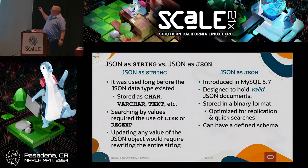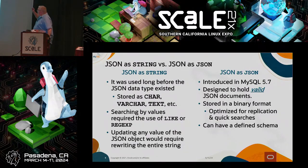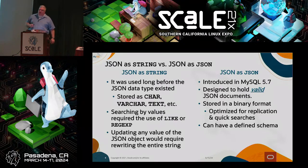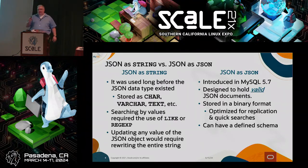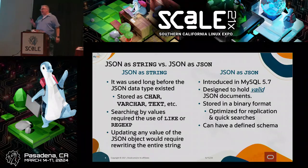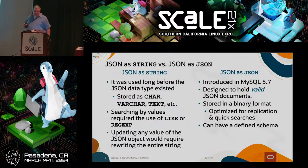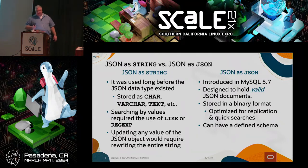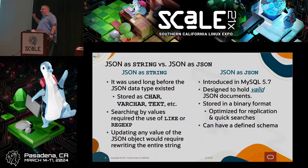In MySQL 5.7, the JSON data type was introduced. It's designed to hold valid JSON documents — that's important because if you try to store something that isn't valid, you'll actually get an error. The data itself is stored in a binary format that has been optimized for replication and quick searches. You can also have a defined schema.